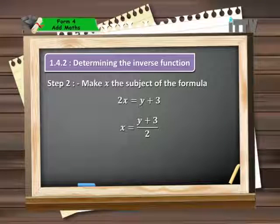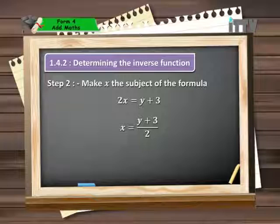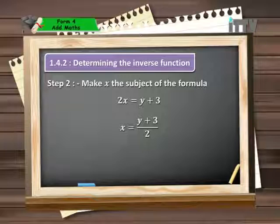Step 2: make x the subject of the formula. That means we want to rearrange the expression such that x is left on the left-hand side and everything else is transferred over to the right. So where formerly y was equal to 2x minus 3, now 2x will be equal to y plus 3, and hence x will be (y plus 3) over 2.